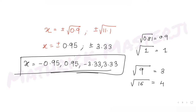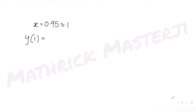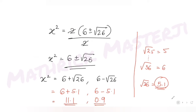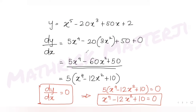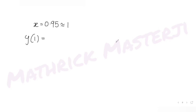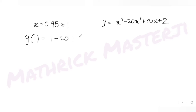Now we check how many times the curve crosses the x-axis using these four critical x-values. At x ≈ 0.95 (approximated as 1): y = 1 - 20 + 50 + 2, which is a positive value. So the function is positive near x = 0.95.